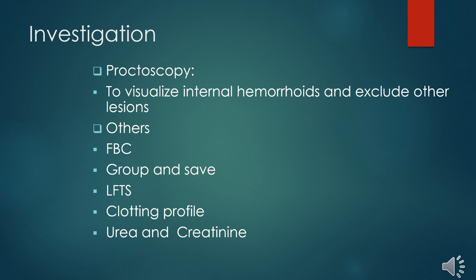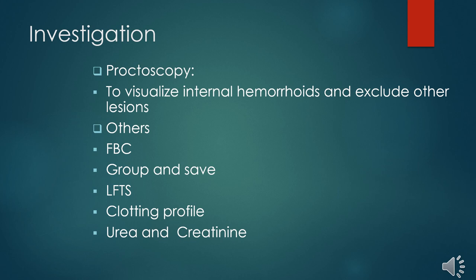The supportive investigations include a full blood count. Since this patient bleeds, you want to look at the hemoglobin — is the patient anemic? You are also interested in the platelet count. Is the platelet count normal or is the patient thrombocytopenic? If the platelet count is low, that could be a differential, as patients tend to bleed at platelet counts less than 50 times ten to the power 9. You would want to rule that out.